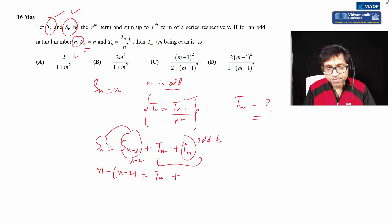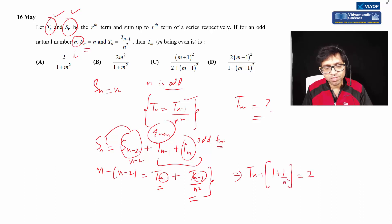Since n is odd, I'm interested in the even term. I'll replace tn using the given relationship tn equals tn minus one divided by n squared. You can see I've replaced tn in terms of tn minus one. Then I'll solve this by taking tn minus one common, giving 1 plus 1 by n squared. The right hand side becomes 2. So I get tn minus one equals 2n squared divided by n squared plus 1. This is my even term.